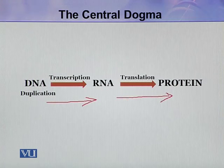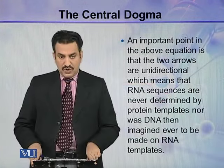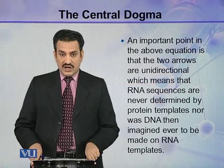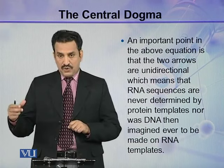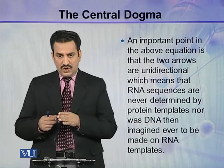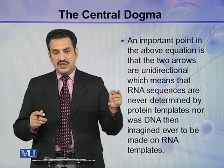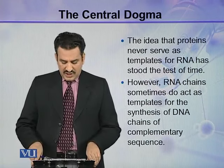This flow occurs during the growth of cells. However, for replication or cell division, the DNA must be copied from pre-existing DNA. An important point is that the two arrows in this equation are unidirectional, meaning that RNA sequences are never determined by protein subunits or protein templates. Similarly, DNA can never be synthesized from protein — that is why unidirectional arrows are used.